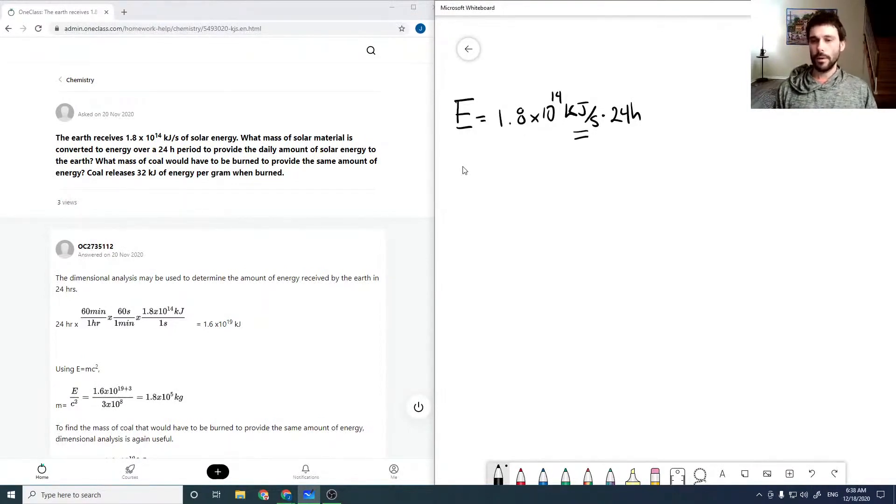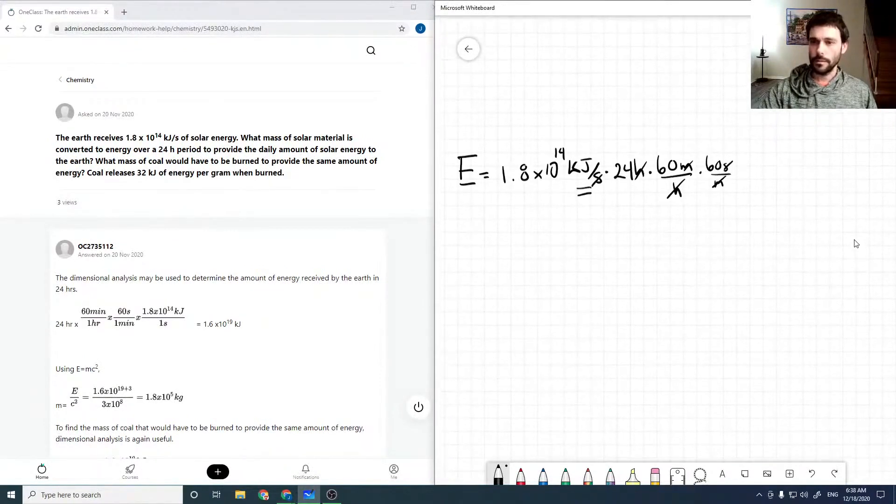So it would be 24 hours times on the top. But of course our hours, we want to cancel the seconds, so we need to multiply by 60 minutes per hour, cancelling the hours, and 60 seconds per minute, cancelling the minutes and the seconds. I'm just going to shift this down in case it's not visible.